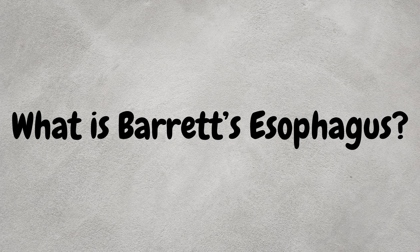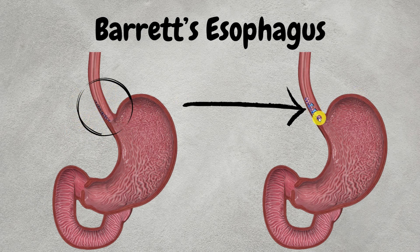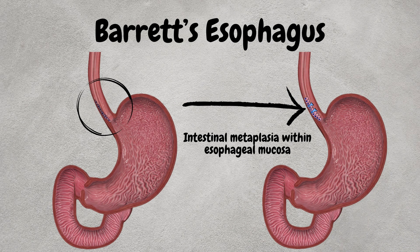First of all, what is Barrett's esophagus? Barrett's esophagus is a condition where the normal lining epithelium of the esophagus is replaced by the intestinal epithelium. This condition is also known as intestinal metaplasia within esophageal mucosa.